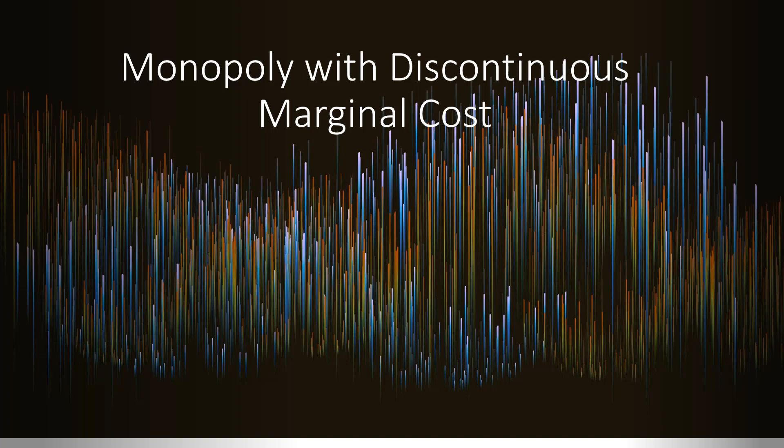Hello. In this video, we're going to look at a monopoly with discontinuous marginal cost. The monopoly has an inverse market demand of P equals 20 minus Q. Marginal cost equals 1 if output is less than or equal to 2, but then marginal cost jumps to $4 if output is greater than 2. The firm's fixed cost is $3. What is the firm's profit?